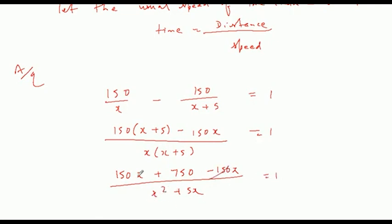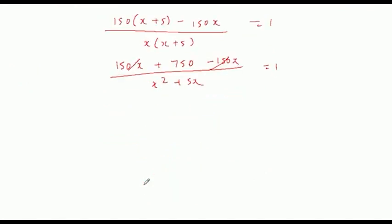750, x square plus 5 x equal to 750. This is x square plus 5 x minus 750 equal to zero.